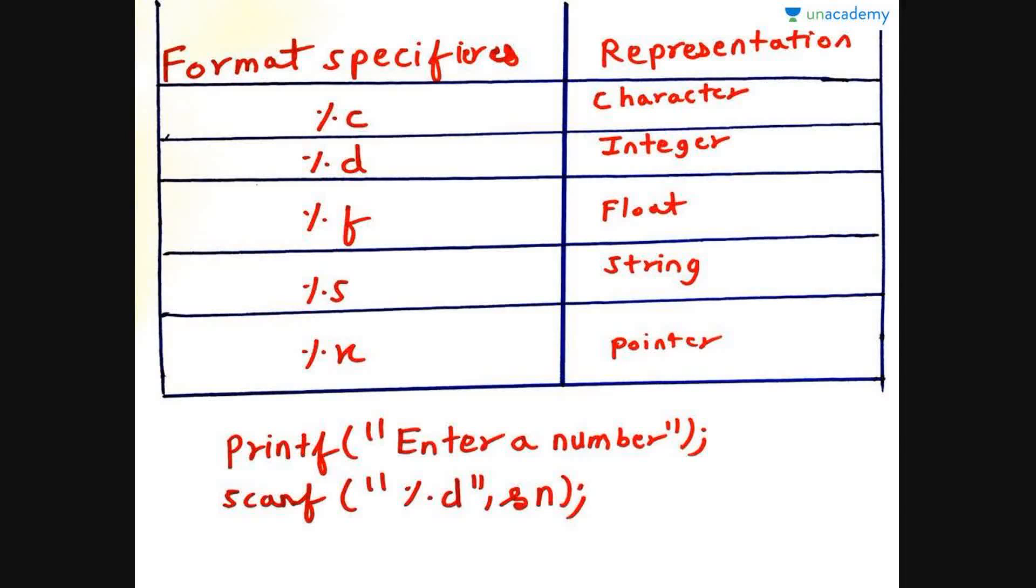Now, for scanf, that is for inputs, we need some format specifiers. The format specifiers are as follows: %c stands for character, %d stands for integer - you can remember d for digits, %f for float used to store decimal numbers, %s stands for string, and the unique one is %x which stands for pointer.